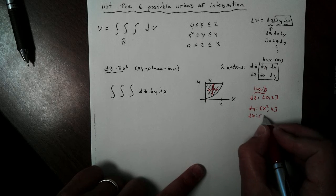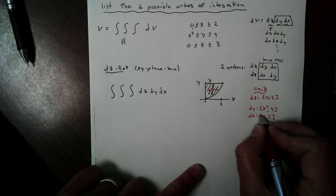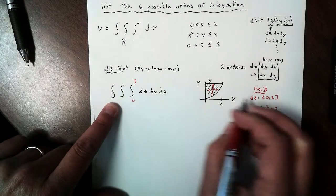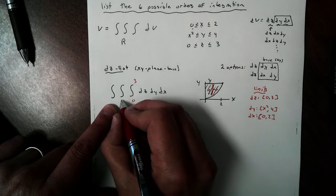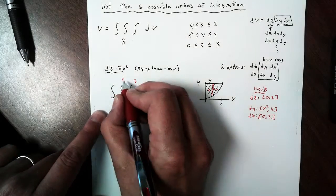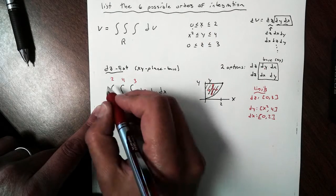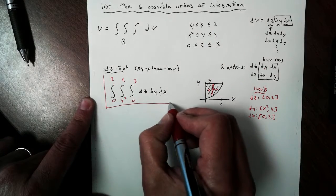My maximum Y value will be 4. And this rectangle is going from left to right from 0 to 2. So DX is going to be from 0 to 2. And I can put those on here. My change in Z's, 0 to 3. My change in Y's, X squared to 4. And my change in X, from 0 to 2. And this will give us our volume.